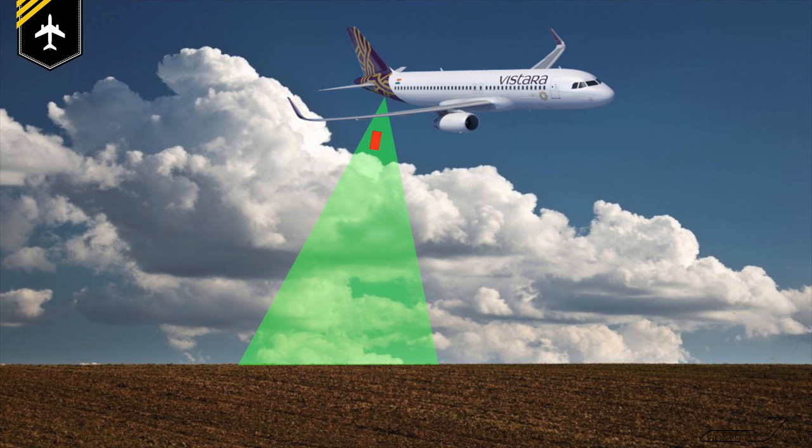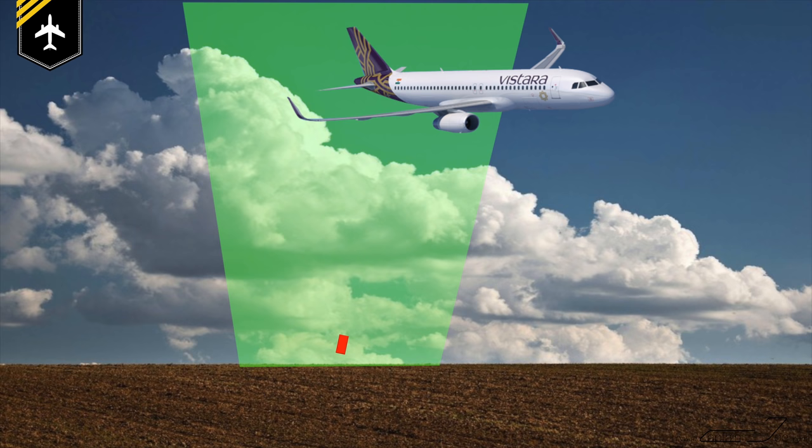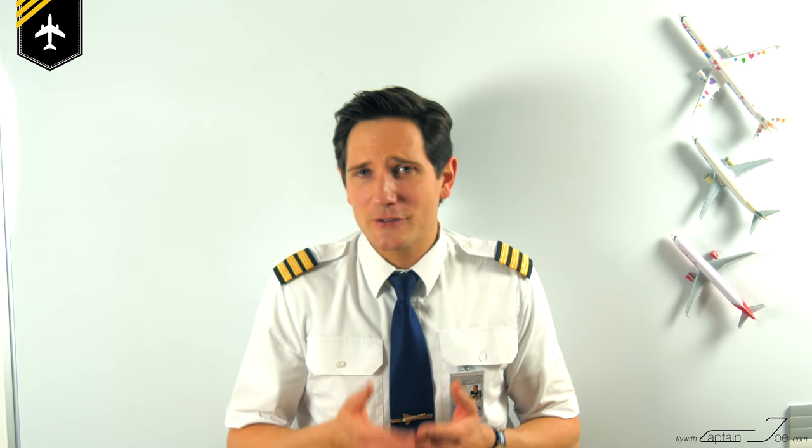The radio altimeter computer then measures the time it took for the radio waves to leave the aircraft, get reflected by the earth's surface, and be received by the receiver antenna. Now radio waves travel at the speed of light, so the speed of light divided by the time it took will give you a distance — or in our case, a height. The calculation looks very similar to this.